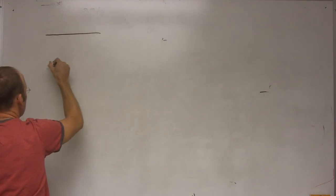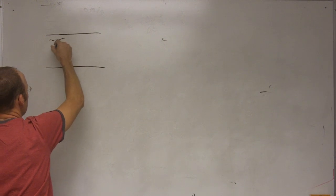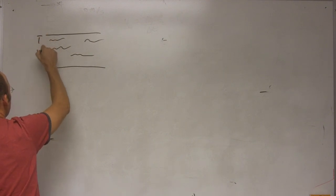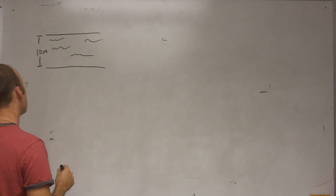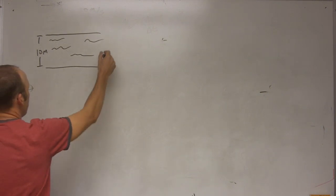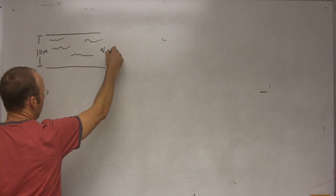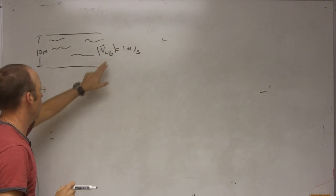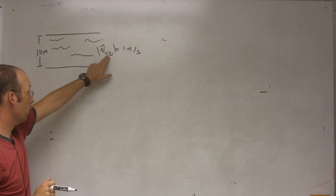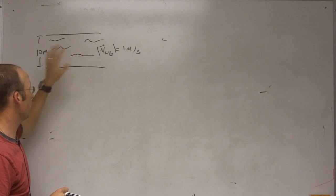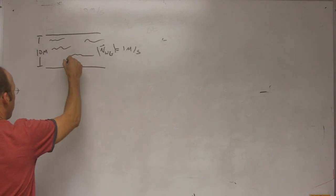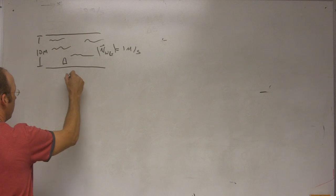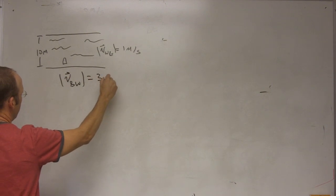Here is the situation. Let's say I have a river, and let's say it's 10 meters wide. The water's flowing, and the magnitude of the velocity of water with respect to the ground is 1 meter per second. You have a boat, and the velocity of the boat with respect to the water has a maximum velocity of 3 meters per second.